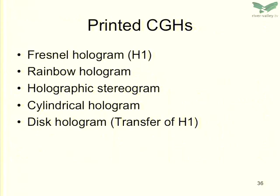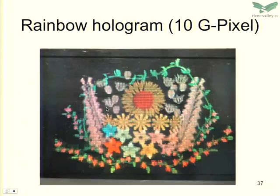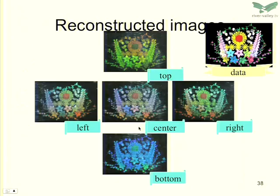Our fringe printer is different from a stereogram printer — a stereogram printer can only record stereograms, but our fringe printer can record any type of hologram. Here are samples: Fresnel hologram, H1, rainbow holographic stereogram, cylindrical hologram, and disk hologram. Here is the reconstructed image of the rainbow hologram — viewed from center, left, and right you can see different perspectives. But since it's a rainbow hologram, if you move up and down, the color changes. This is the original CG data.